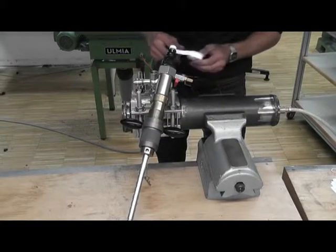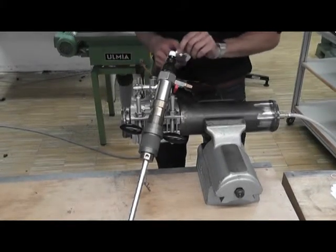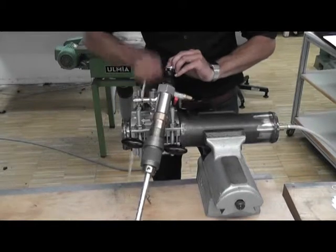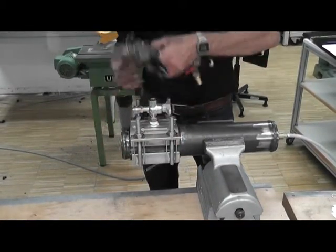Now we are going to install the driller which we prepared before. Before installing the driller, it's useful to use some teflon tape on the screw. Screw the driller inside the thread of the ball valve.